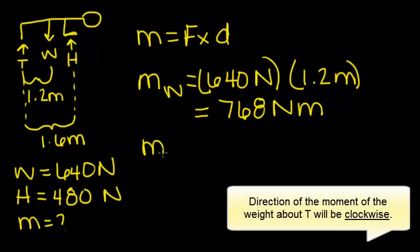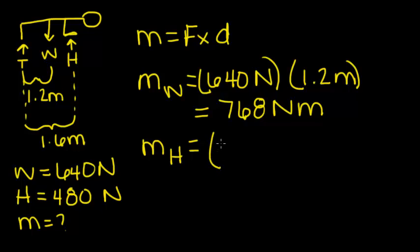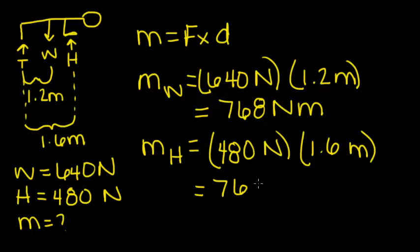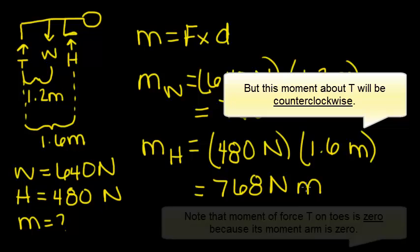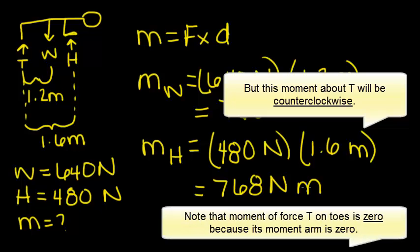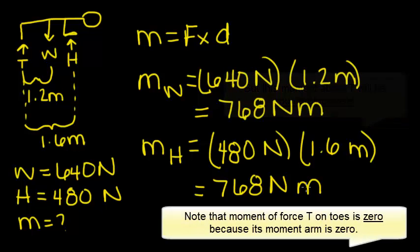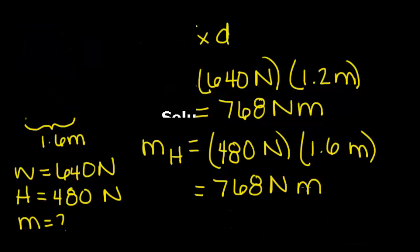The moment about point T of H, his ground reaction force, is found by multiplying the force 480 newtons by the distance 1.6 meters, and we also get 768 newton meters. These are the two moments about point T in relation to his weight and his ground reaction force H.